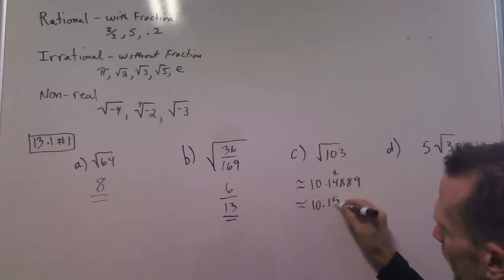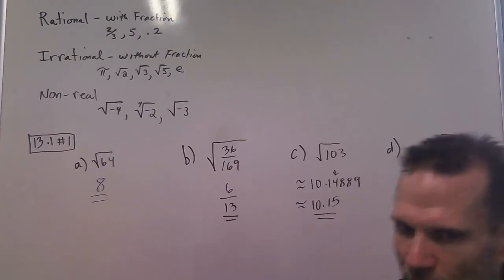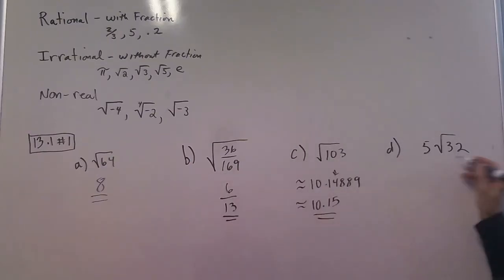And then on this last one here, we're going to take five times the square root of 32. So when we take five times the square root of 32 on our calculator, we get approximately 28.28 after the rounding.